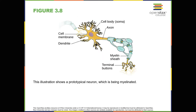Section 3.2: Cells of the Nervous System. Learning Objectives. By the end of this section, you'll be able to: 1. Identify the basic parts of a neuron. 2. Describe how neurons communicate with each other. 3. Explain how drugs act as agonists or antagonists for a given neurotransmitter system.